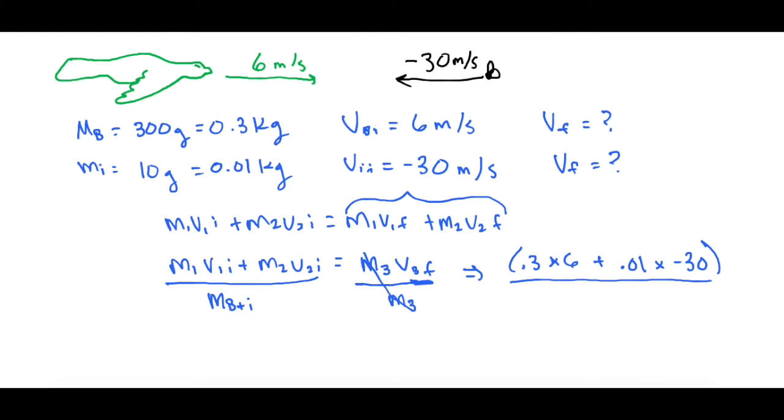And then we divide all of that by the mass of both of them together. So we have 0.3 plus 0.01. So we have 0.31 kilograms.